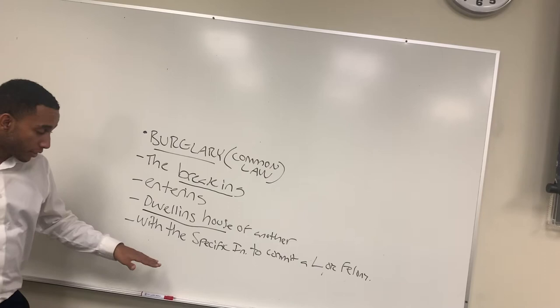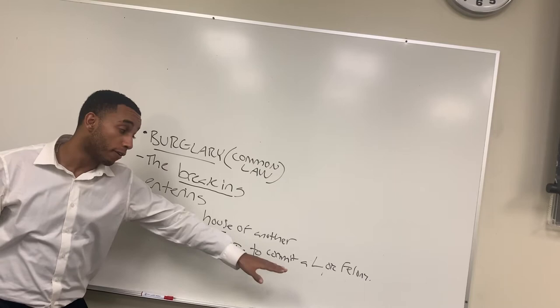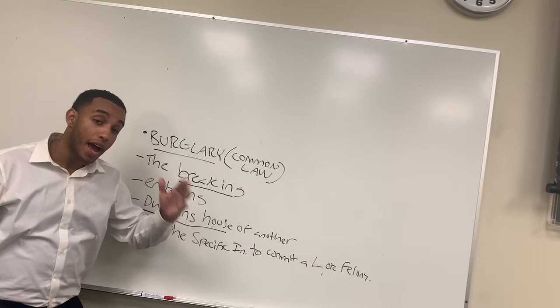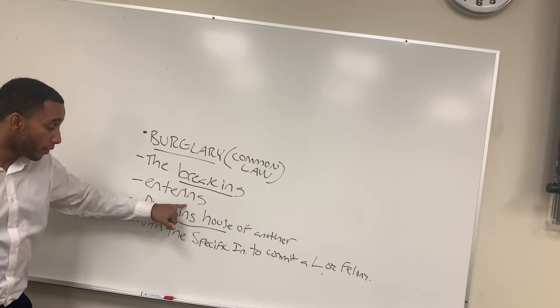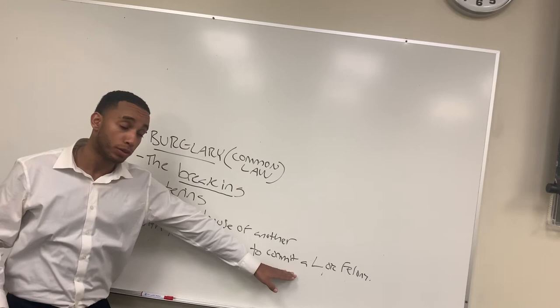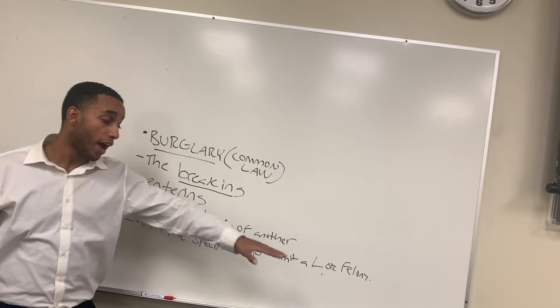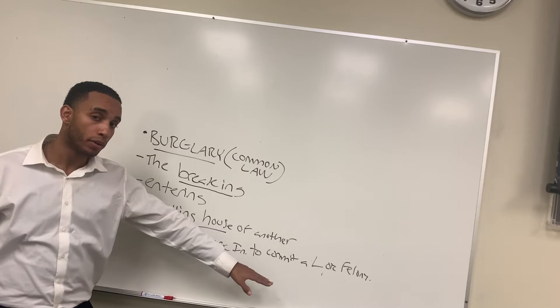Lastly, the defendant must have the specific intent to commit a larceny or a felony therein. The defendant must have the plan before he or she makes the breaking and entering into the dwelling house of another during the nighttime to commit a larceny — which we just talked about — or a felony therein. It could be any felony. As long as they have the requisite felonious intent, the defendant is culpable of burglary under the common law.